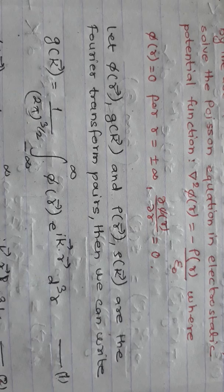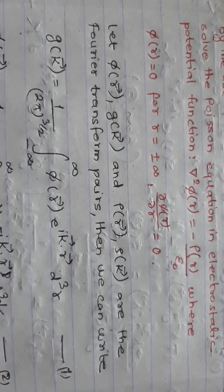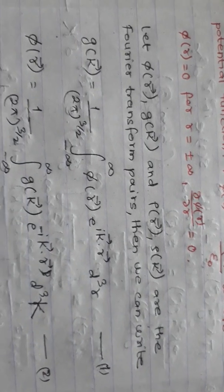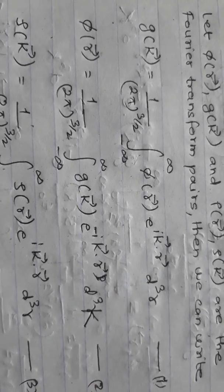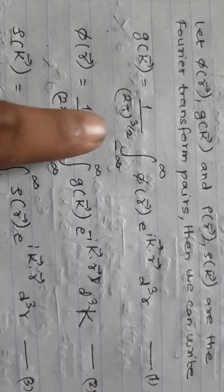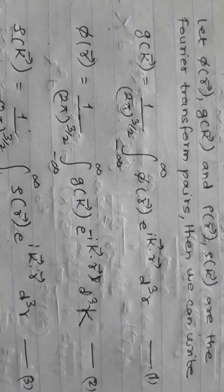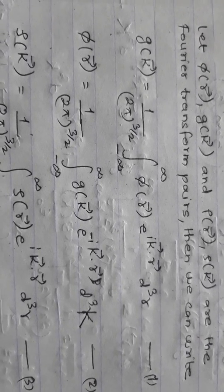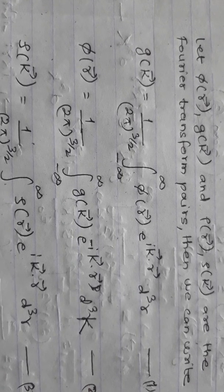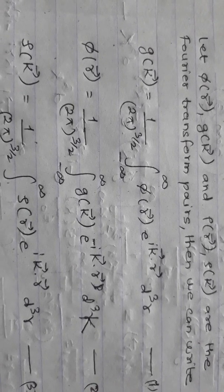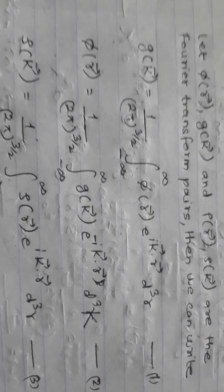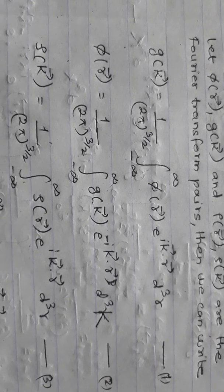Let phi(r) and G(k), and rho(r) and rho(k), be the Fourier transform pairs. Since this is a 3D transformation, G(k) equals 1 over (2 pi)^(3/2) times the integral of phi(r) e^(-i k·r) dr. Likewise, for phi(r) we use the inverse Fourier transform, and similarly rho(k) is the Fourier transform of rho(r).